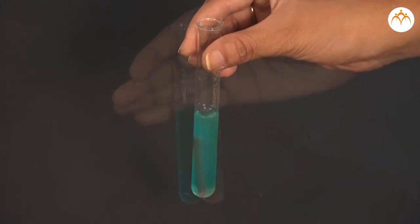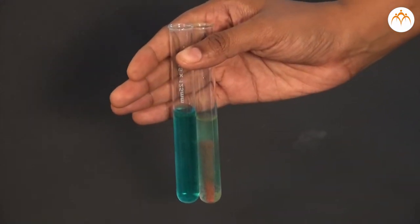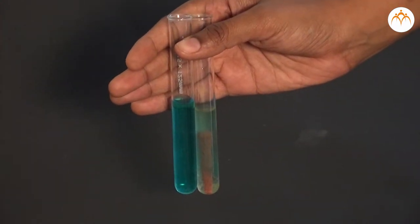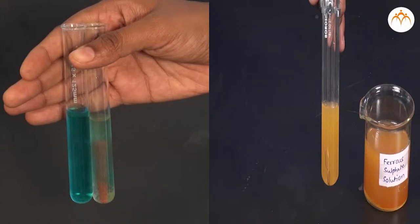Observe the reaction. The blue colour of copper sulphate turns to green and copper coating is formed on the iron nail. The reaction is taking place in the first test tube but in the second test tube there will not be any reaction between copper and iron sulphate solution.